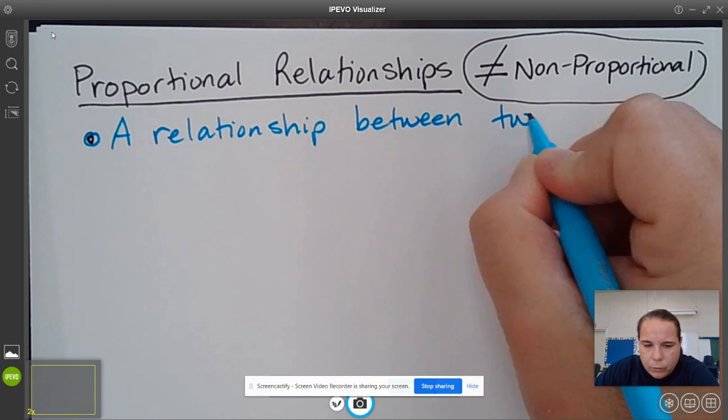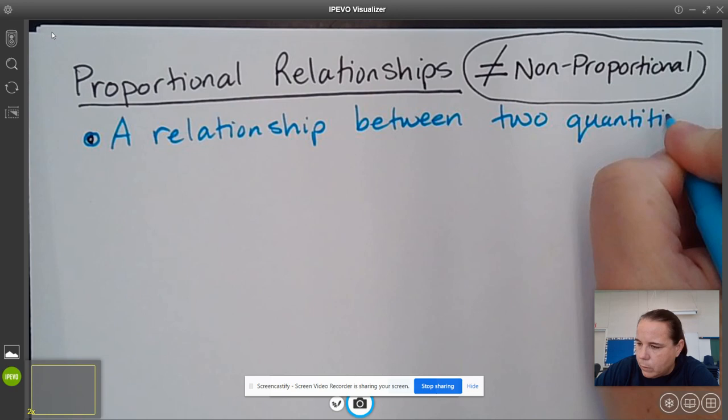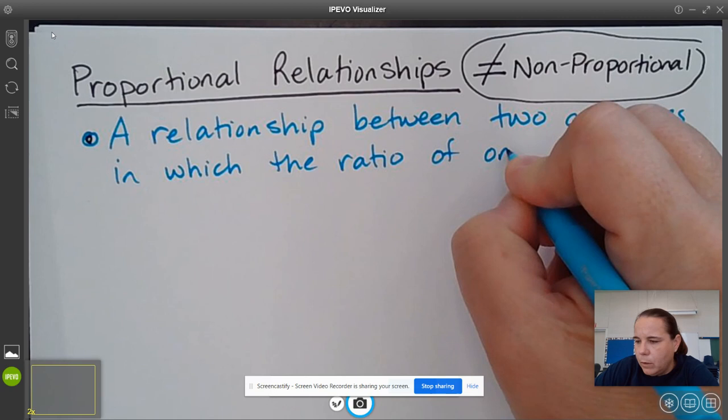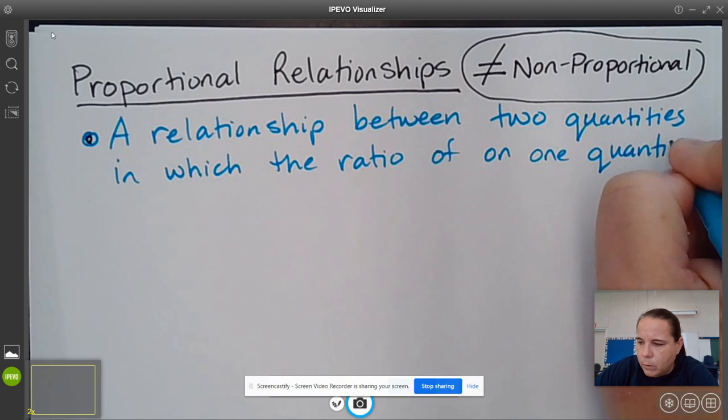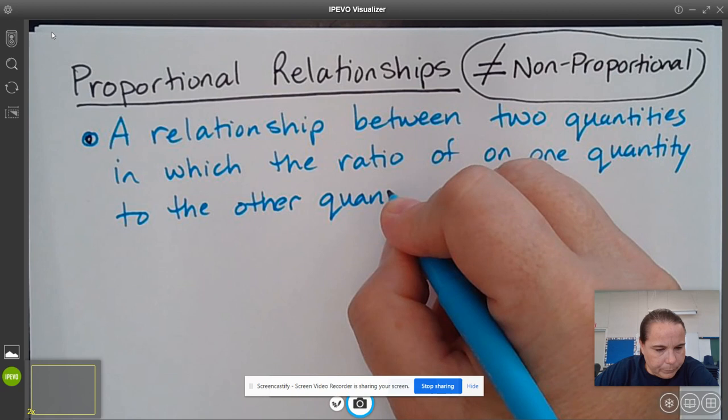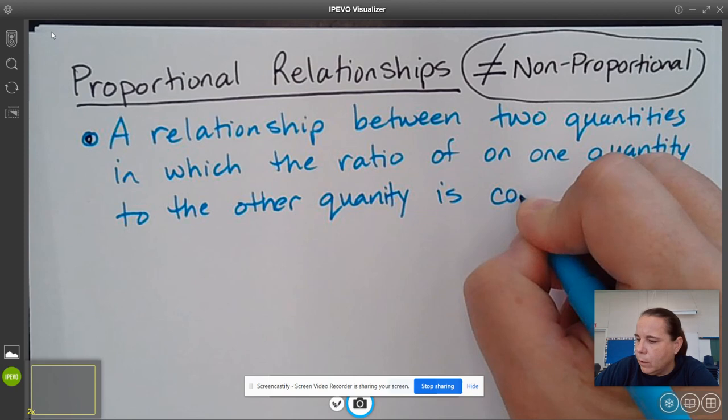between two quantities in which the ratio of one quantity to the other quantity is constant.